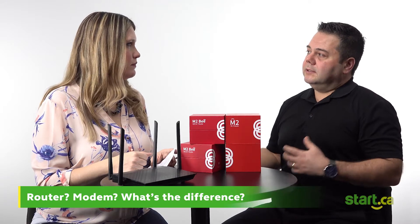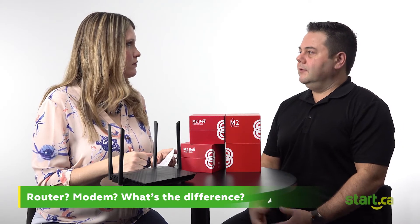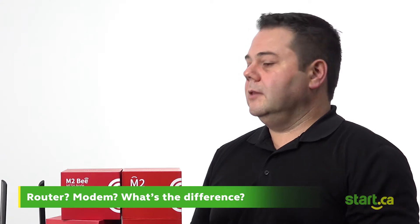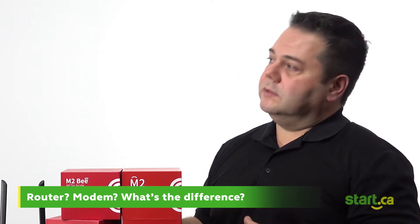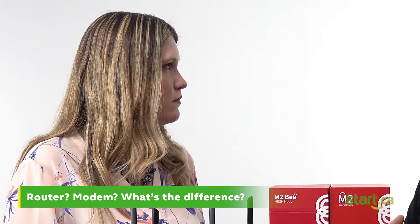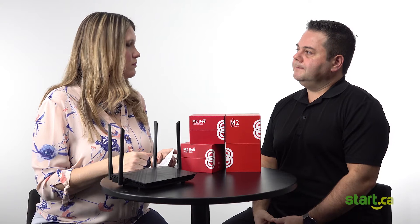So the modem is the piece that takes the line coming into your home, either your fiber line or your cable coax line or your telephone line, and takes those signals from outside and brings them into your house. And then the router is the piece that takes that connectivity to the internet and delivers Wi-Fi within your home.